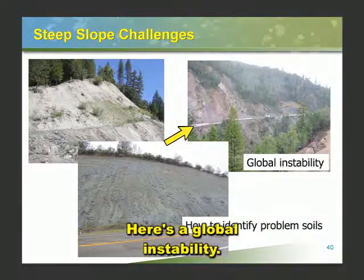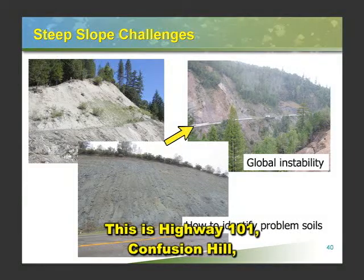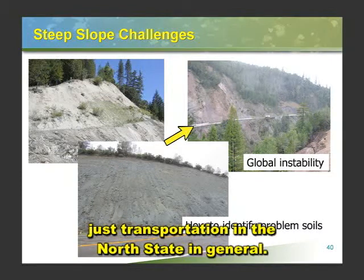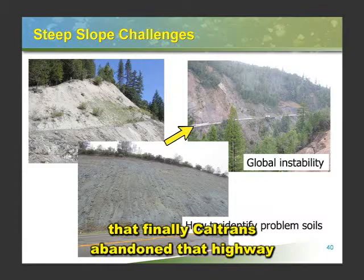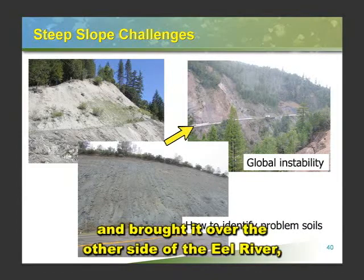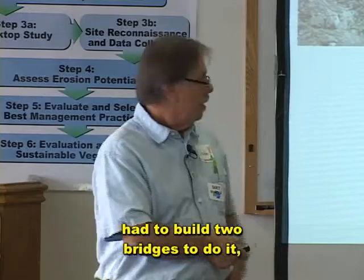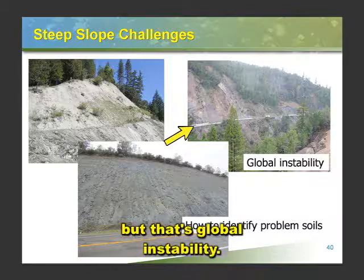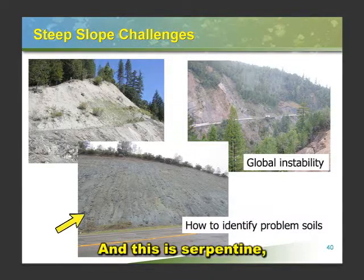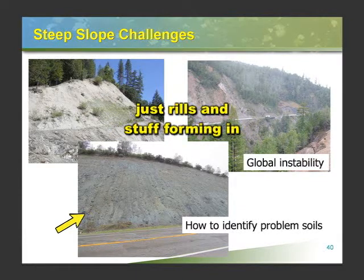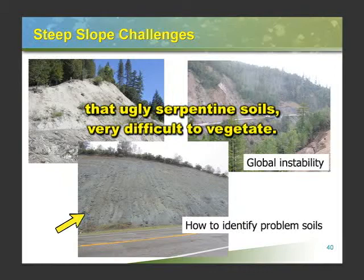Here's a global instability. This is Highway 101, Confusion Hill — been such a problem for Caltrans, just transportation in the north state in general. You're isolated up in Eureka. Finally Caltrans abandoned that highway and brought it over the other side of the Hill River, had to build two bridges to do it. But that's global instability. And this is serpentine — that would be a very local sort of instability, just rills and stuff forming in that ugly serpentine soil. Very difficult to vegetate.